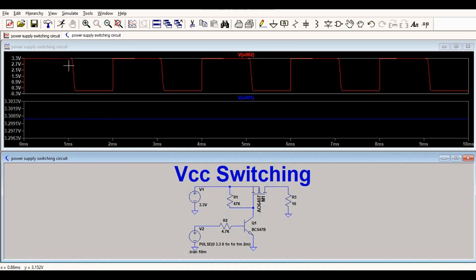on time and one millisecond is off time. You can see your VCC is switching, connecting and disconnecting to the load. This is 3.3 volts input from V1, and the voltage across R3, the output voltage, is 3.3 volts, but it is switching at a certain frequency.